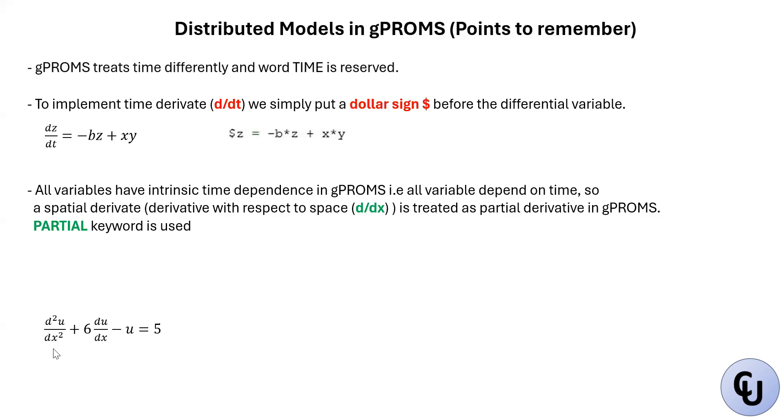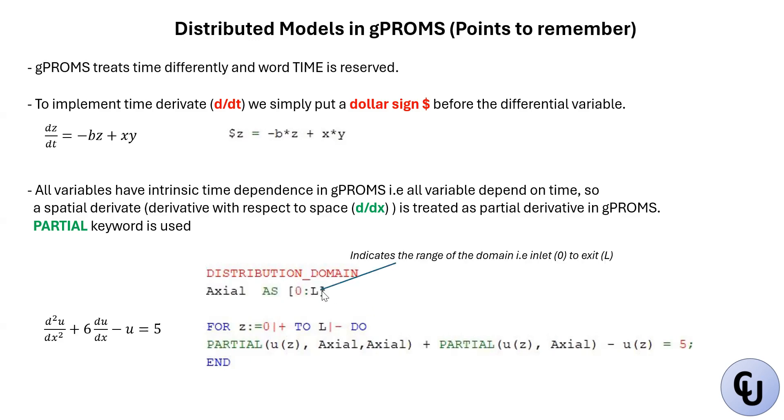Let's say you want to write this equation: d squared u/dx squared plus 6 du/dx minus u equals 5 in gPROMS. You first declare a distribution domain. This distribution domain is what represents this axial domain, this x that you have. That is a domain that runs from 0 up to L. L is like the full length. Let's assume you have a tube. The inlet of the tube is 0 and the exit of the tube is L. To solve the problem, this problem is solved numerically and this domain is discretized. It's going to slice the domain in bits and the equation will be solved within each domain.